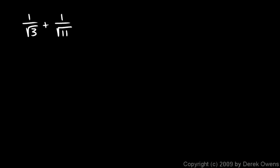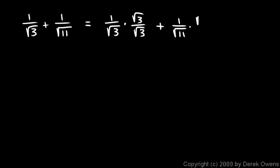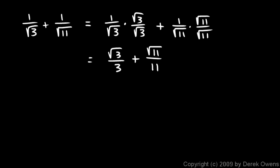One more example: 1 over the square root of 3 plus 1 over the square root of 11. We're not supposed to have radicals in the denominator, so I'm going to take care of each of those. I'll write this as 1 over square root of 3 times square root of 3 over square root of 3, plus 1 over square root of 11 times square root of 11 over square root of 11. Multiplying those out: the first one becomes square root of 3 over 3, and the second term becomes square root of 11 over 11.